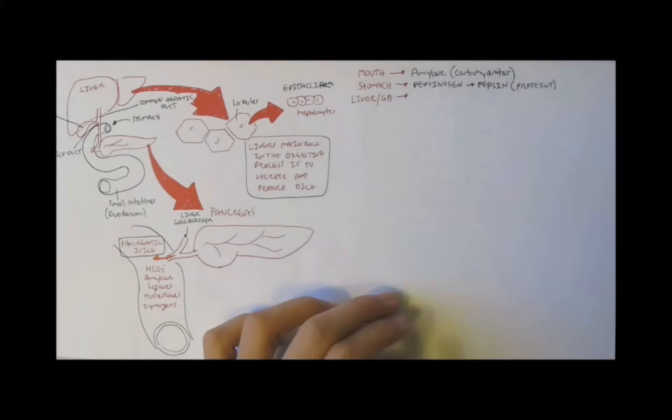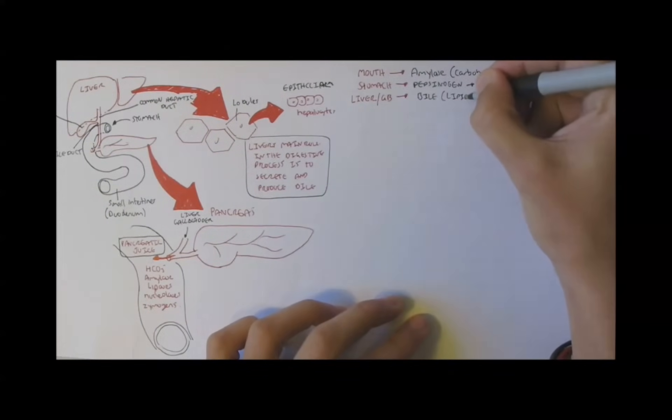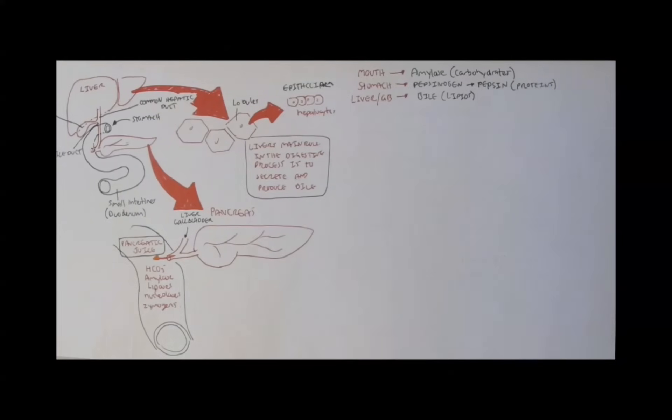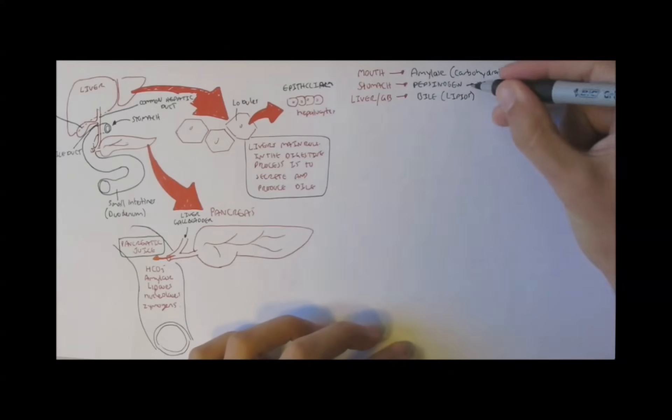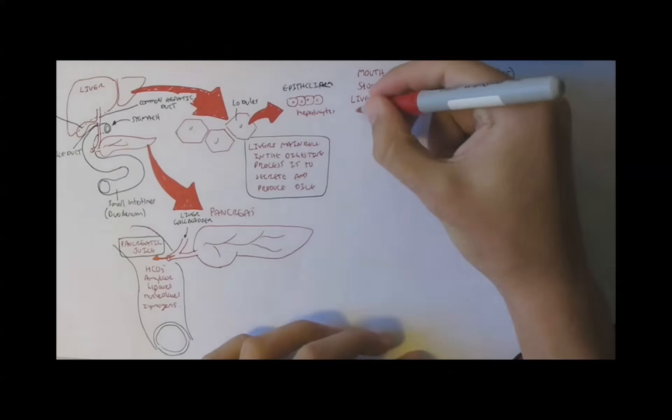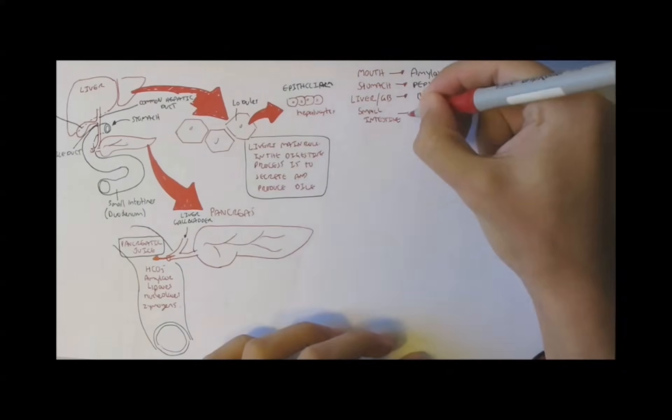The liver and gallbladder secrete bile to digest fat. And, going back to the stomach, the stomach also importantly secretes hydrochloric acid to break down food with the acid. And then, it also secretes mucus as self-defense against the acid.